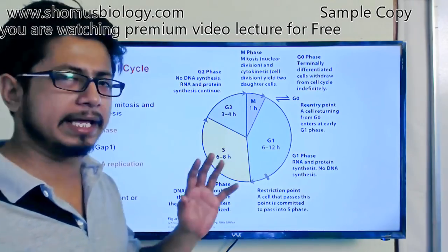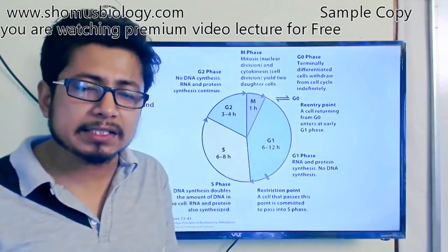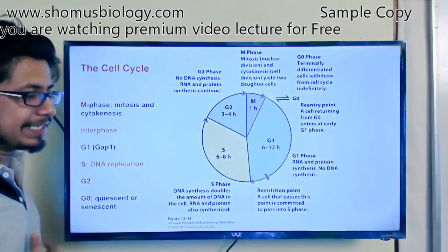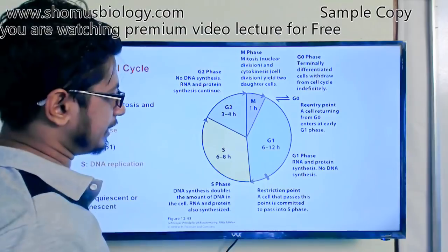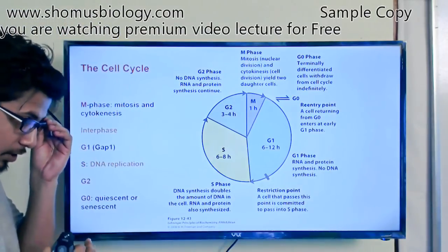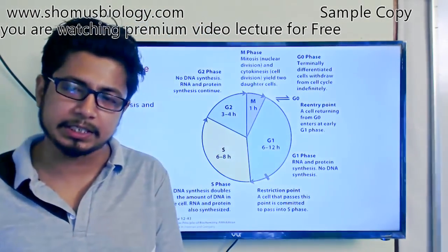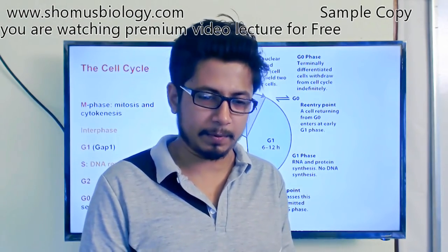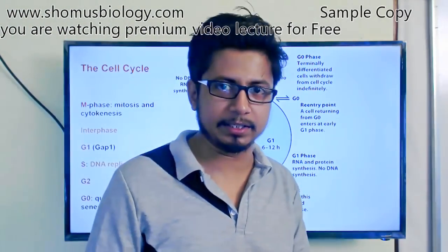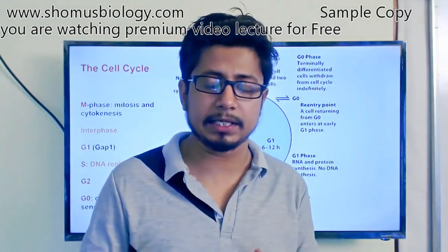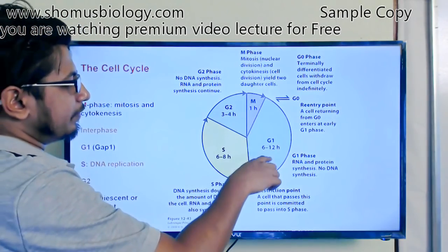You need to understand the regulation of the cell cycle in much more detail. The cell cycle begins with G1 phase, where RNA and protein synthesis occur but there is no DNA synthesis at all. Once you are in G1 phase, you cannot go back — it's a rate-determining point. Before entering G1, the cell checks whether everything is prepared, because cell division is a huge event. If not ready, it will not enter G1 and will remain in G0 state.